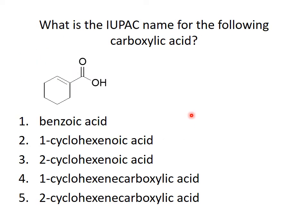What is the IUPAC name for this carboxylic acid? To answer this, look at the longest chain — the longest chain is the cyclohexene ring and the carboxylic acid is attached to it. There is no cyclohexenoic acid as a standalone chain name. When the carboxylic acid is attached to a ring, we call it a carboxylic acid attached to that ring. So this is cyclohexenecarboxylic acid, and since the carboxylic acid must be the number one carbon, we call it 1-cyclohexenecarboxylic acid.